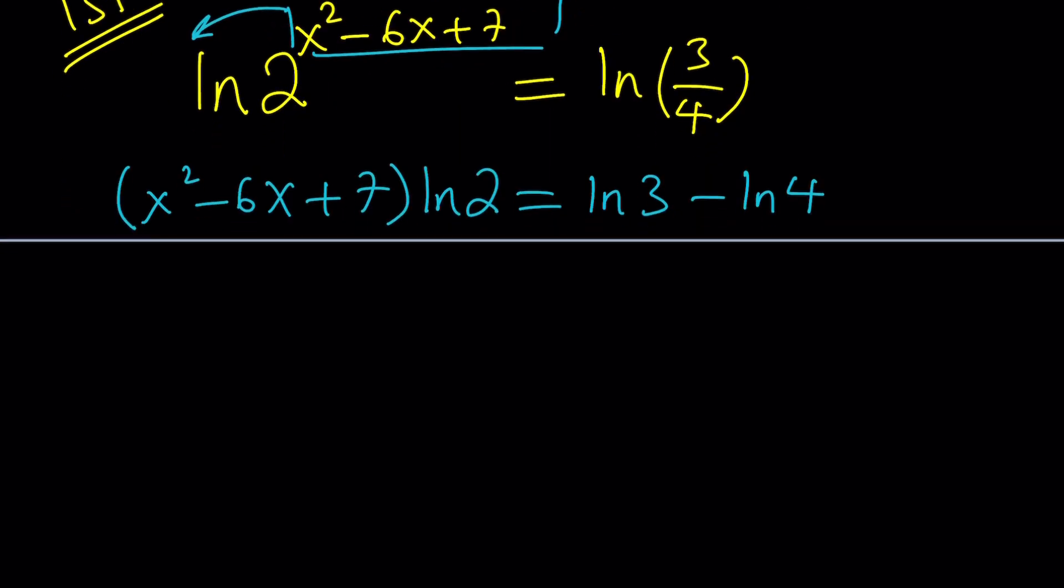We're going to get ln 2 as the coefficient of x squared and then minus 6 ln 2 as the coefficient of x. There's no other x term and then we have plus 7 ln 2 and the other terms we're going to bring to the left by subtraction minus ln 3 plus ln 4. The whole thing equals 0.